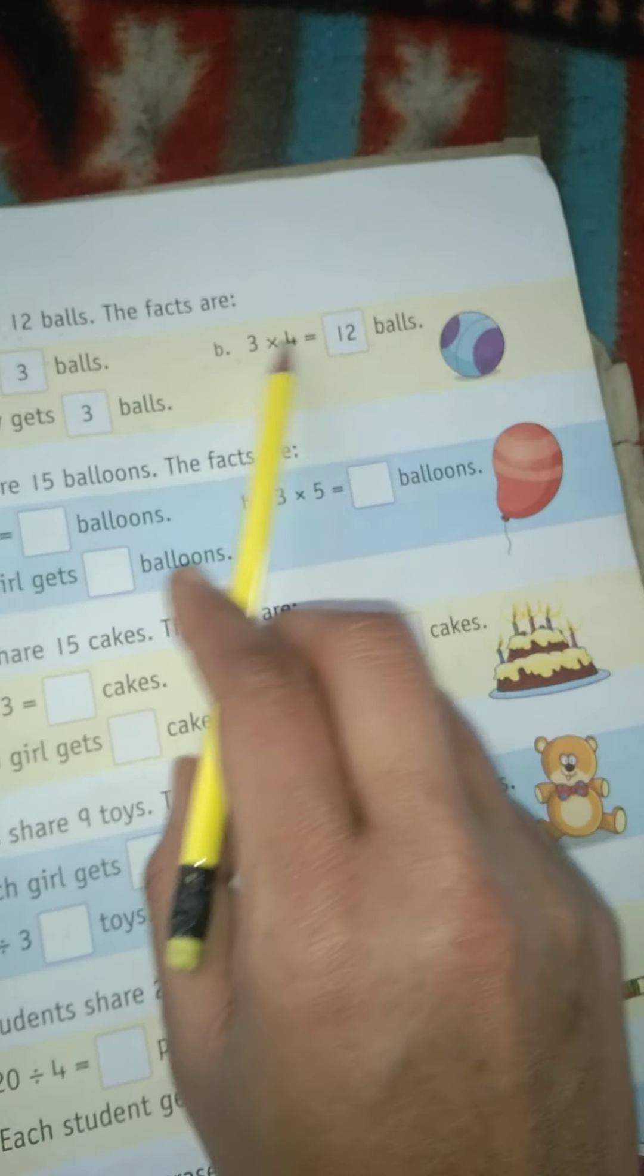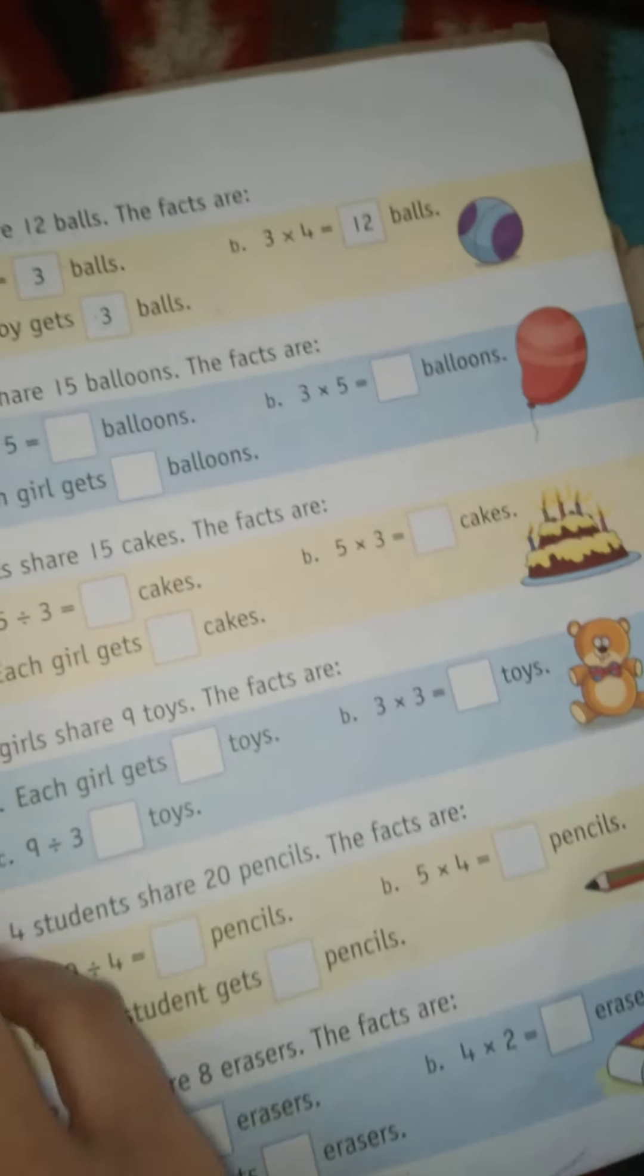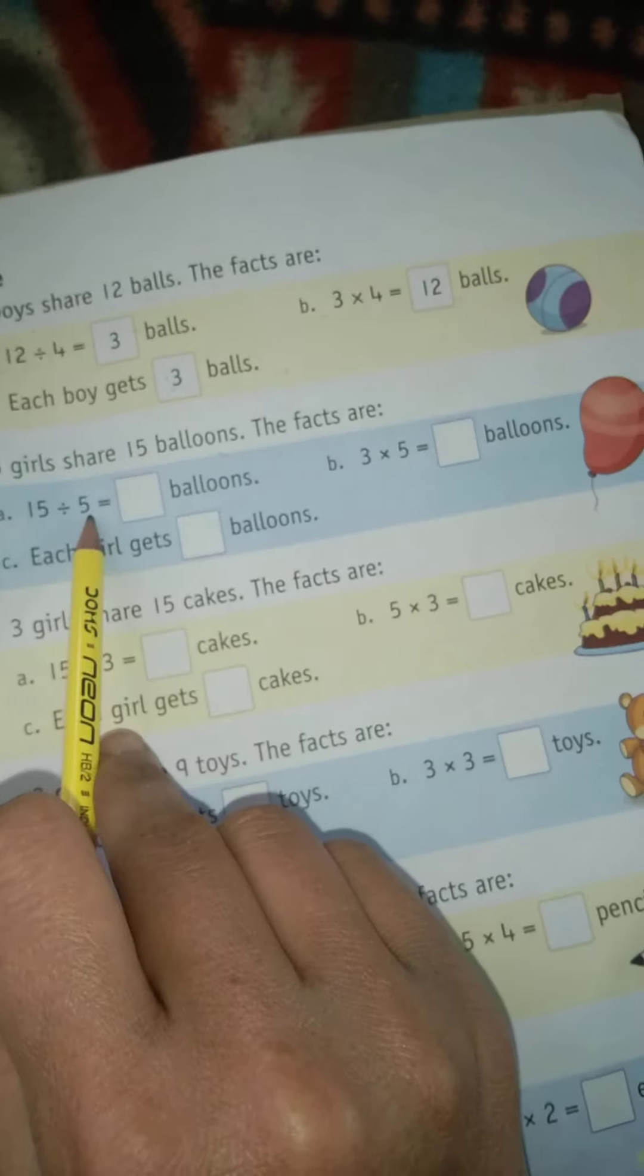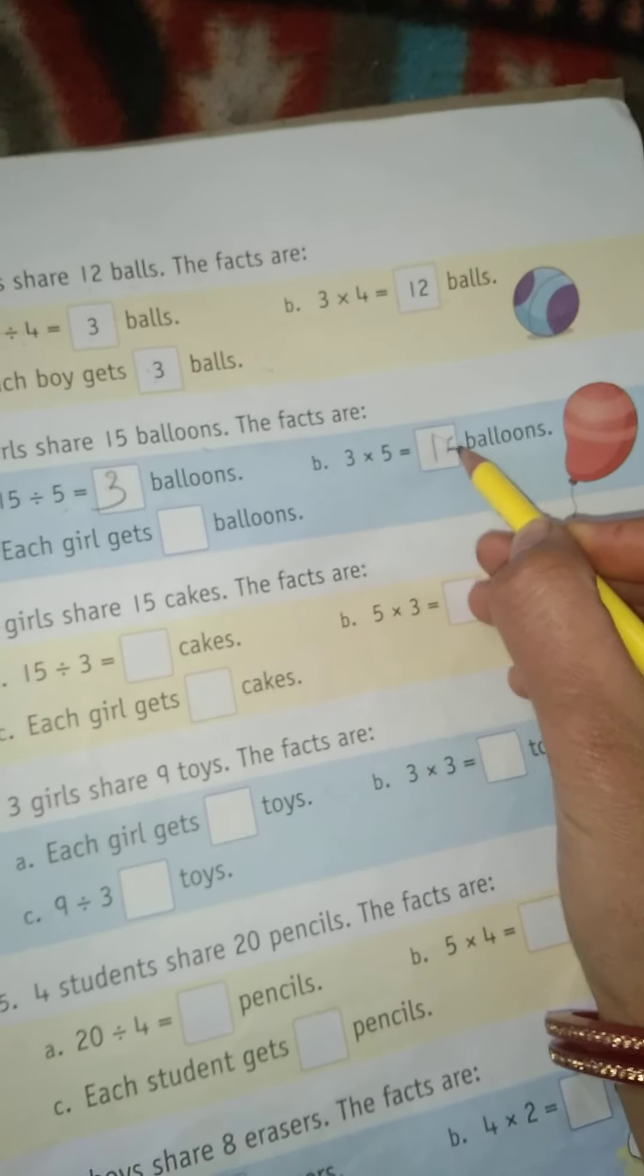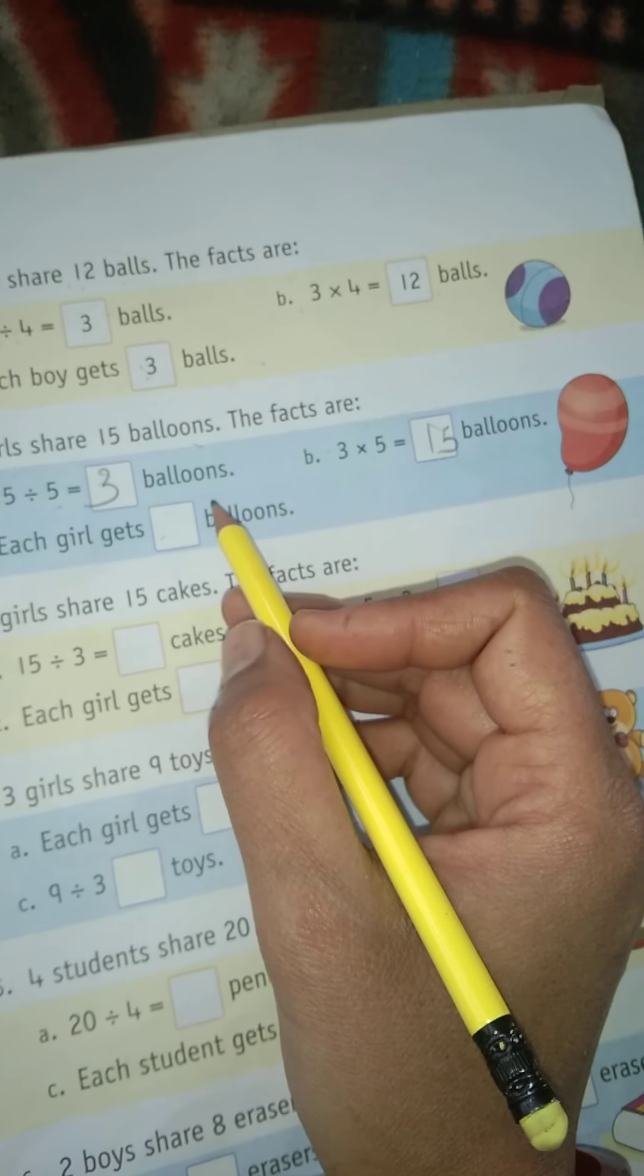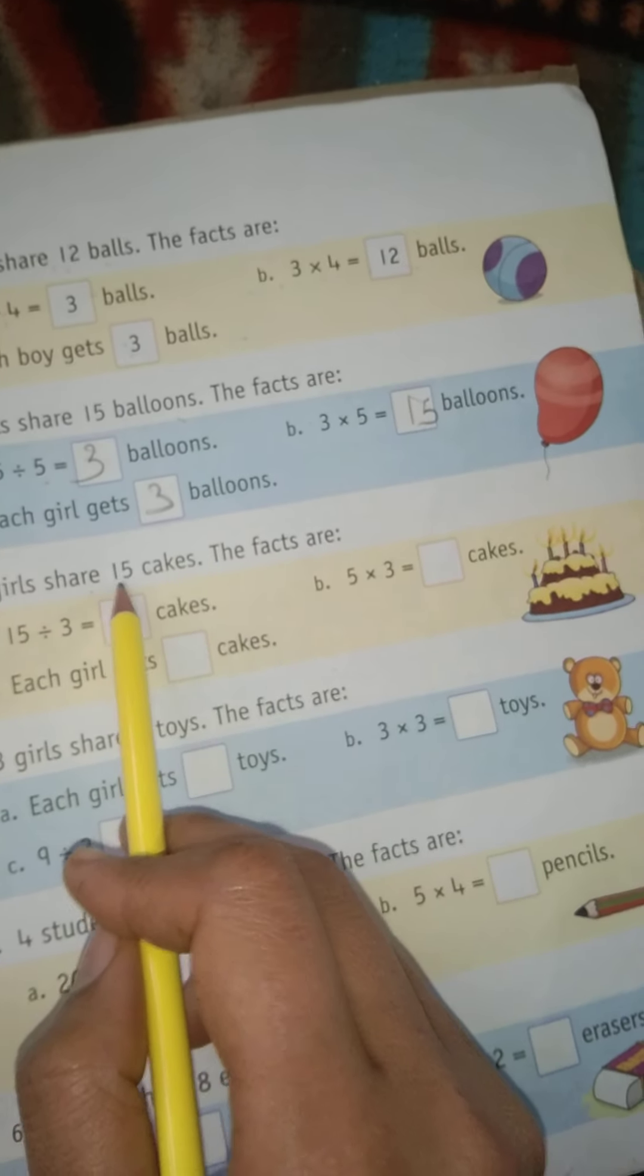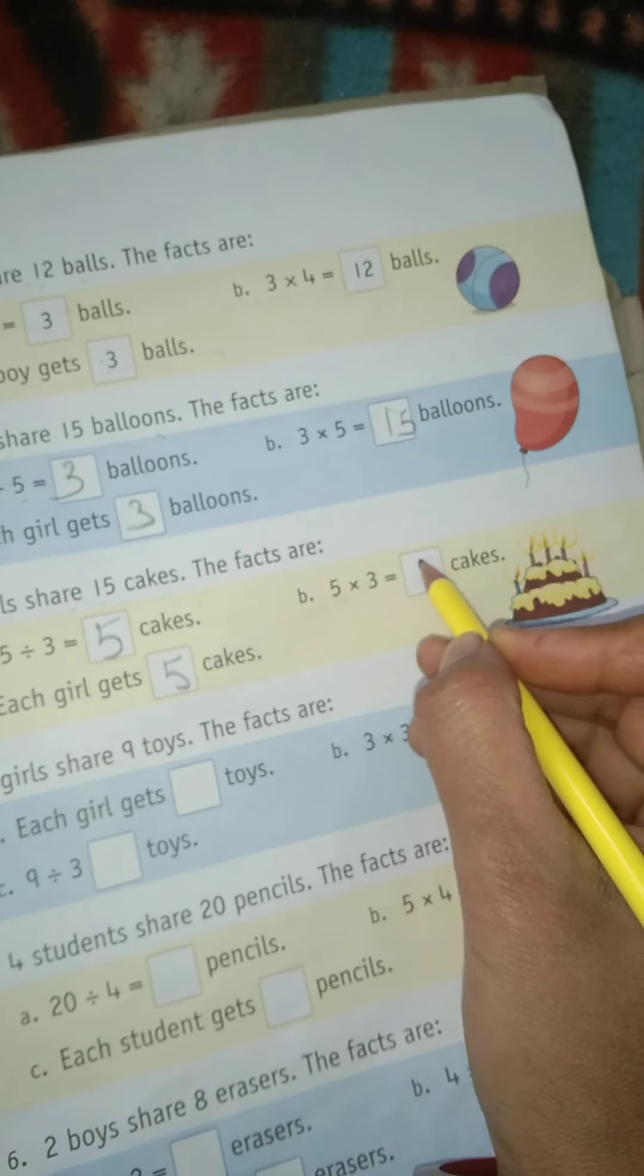3 times 4 equals 12 bolts, each boy gets 3 bolts. 5 girls share 15 balloons, the facts are: 15 divided by 5 equals 3. Each girl gets 3 balloons. Girls share 15 cakes, the facts are: 5 times 3 equals 15.